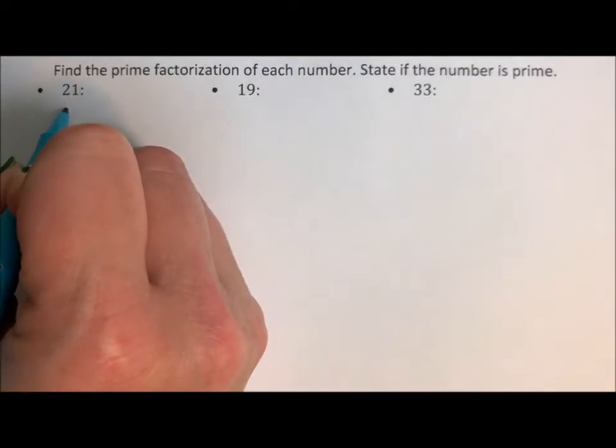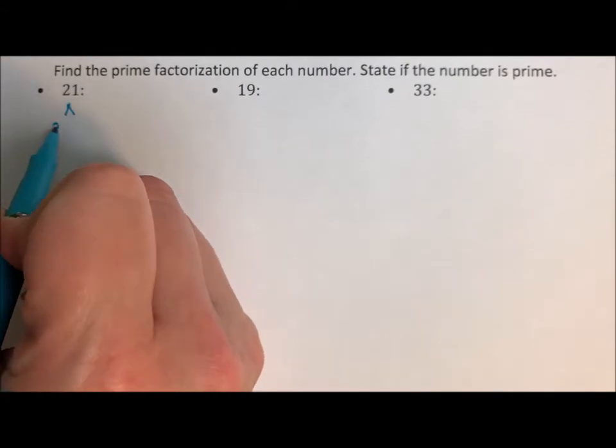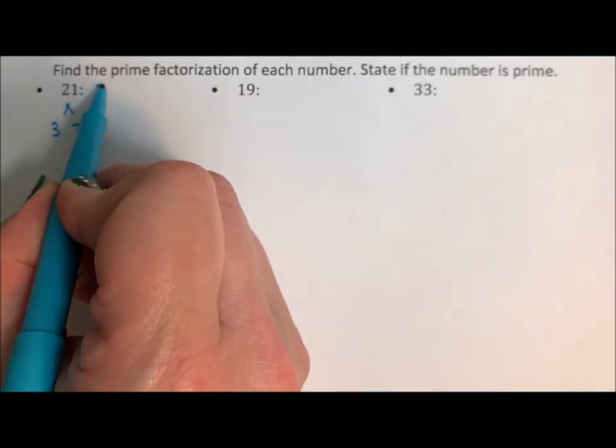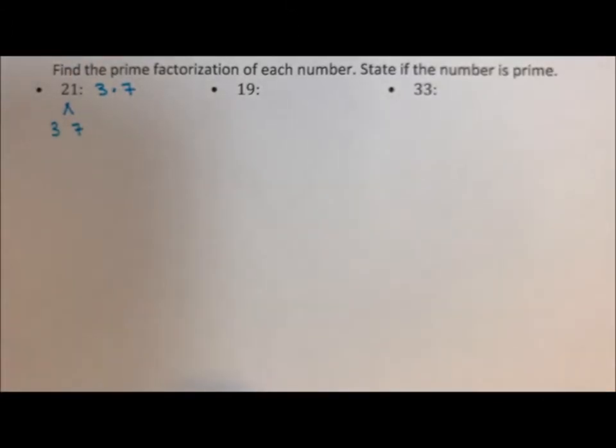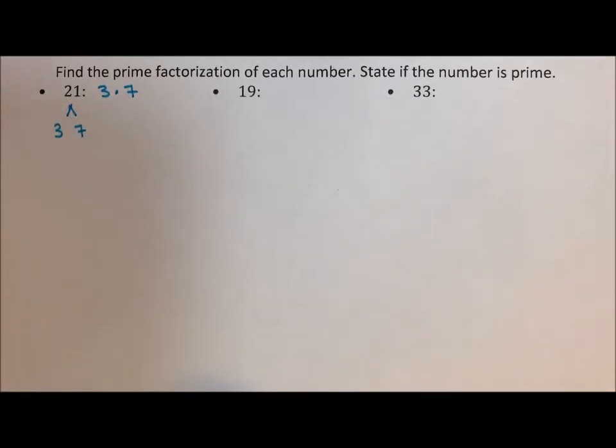So 21 is 3 times 7. 3 times 7. When we do prime factorization, we often end up writing out the number as a product of the primes.